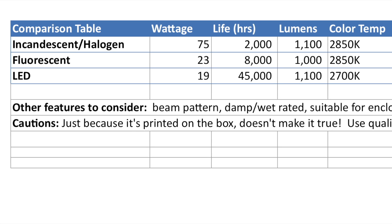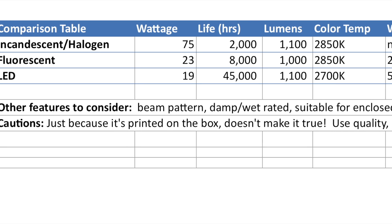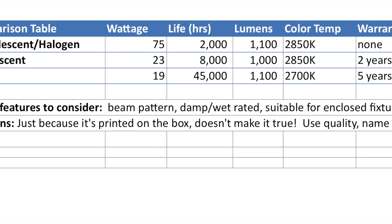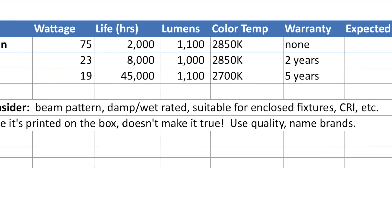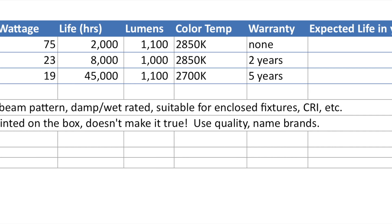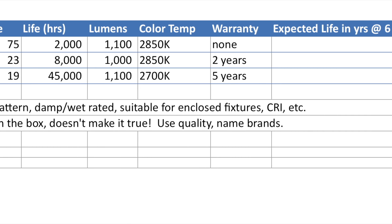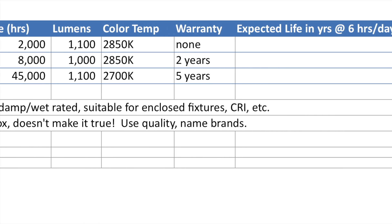So here's what you do. You get a simple spreadsheet and lay out the different types of bulbs that you want to compare. Create columns for the different fields or points of the bulb that you want to compare as well — maybe that's wattage, lumen output, and life.